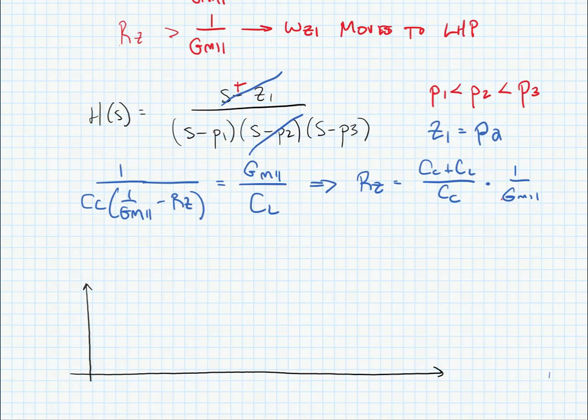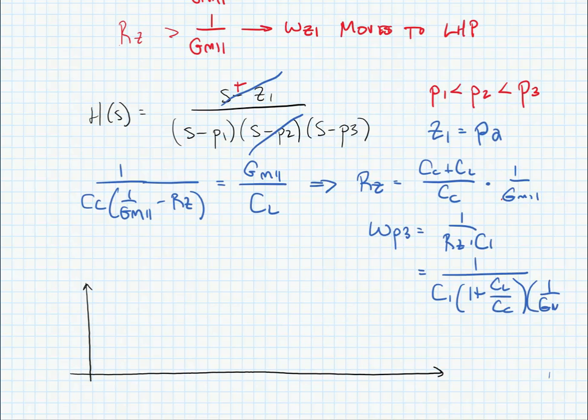Our new value for this is going to affect omega p3 because omega p3 depended upon z and rz. So omega p3 is now going to be equal to 1 over rz times c1. We can substitute our new value for rz and we find that the new omega p3 is equal to 1 over c1 times 1 plus cl over cc times 1 over gm2.